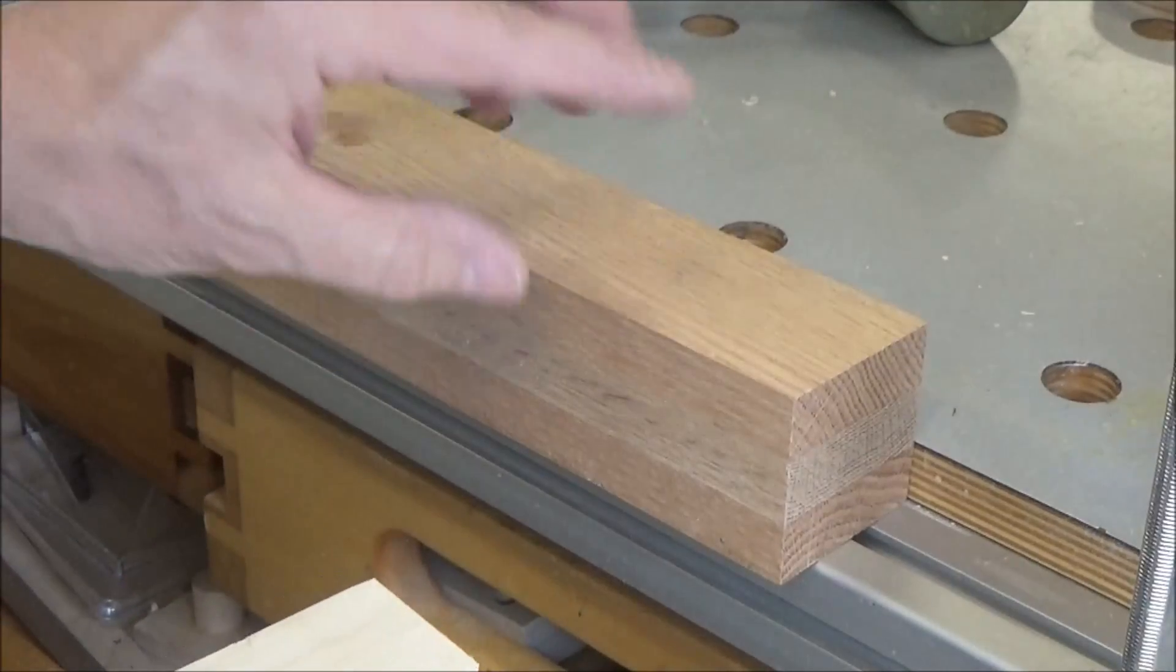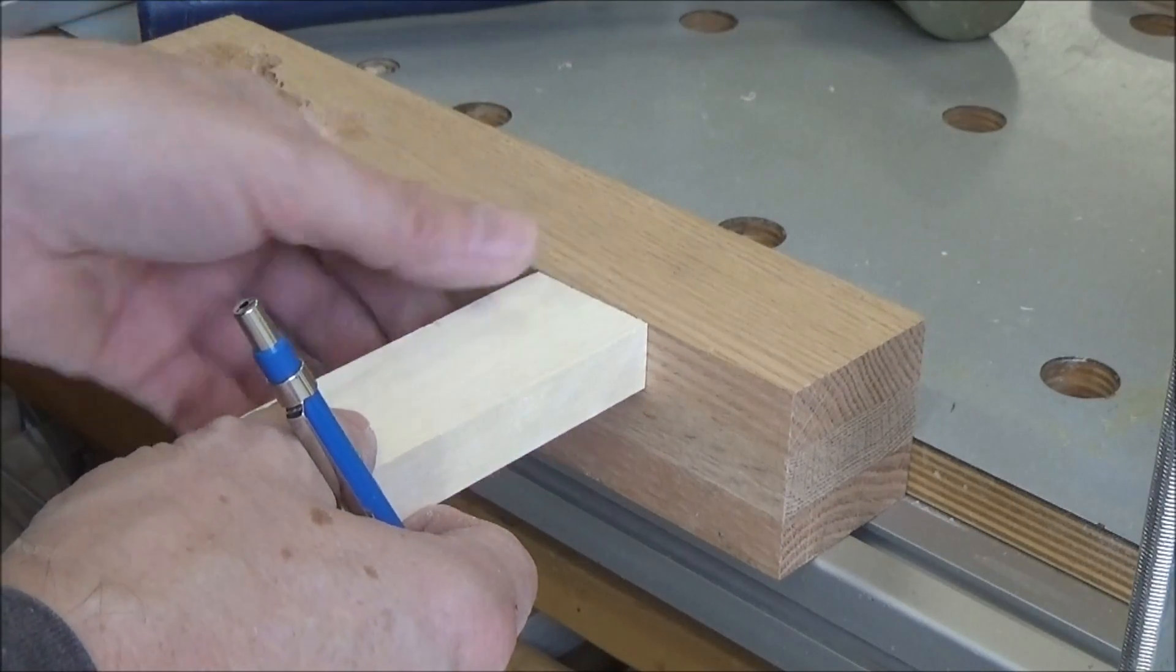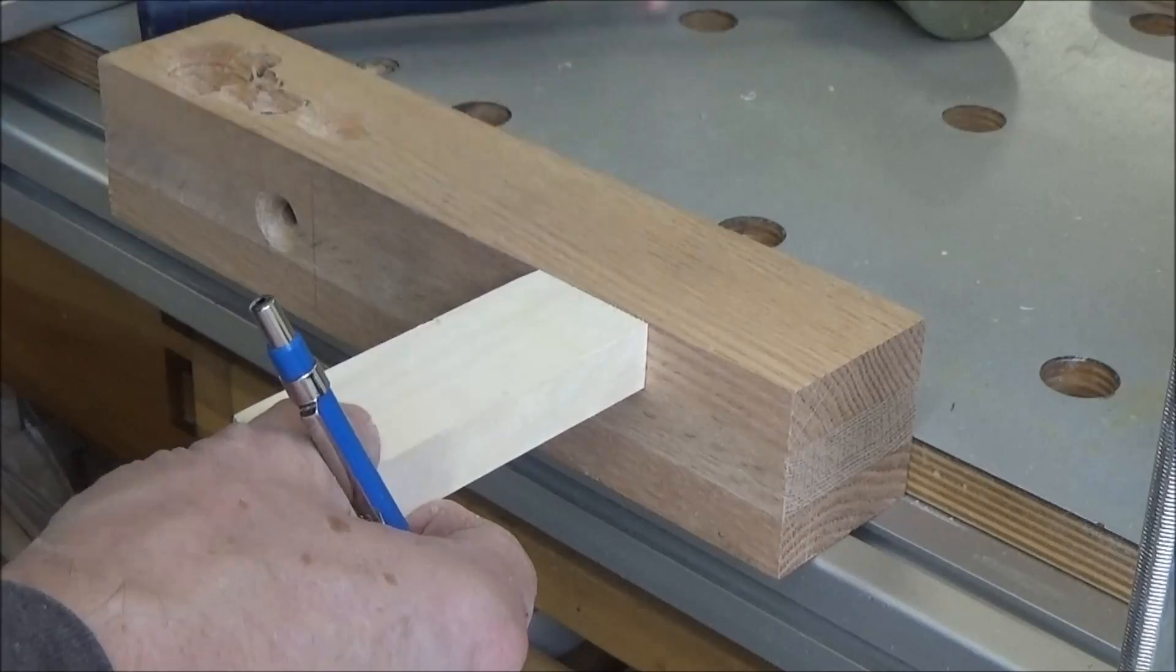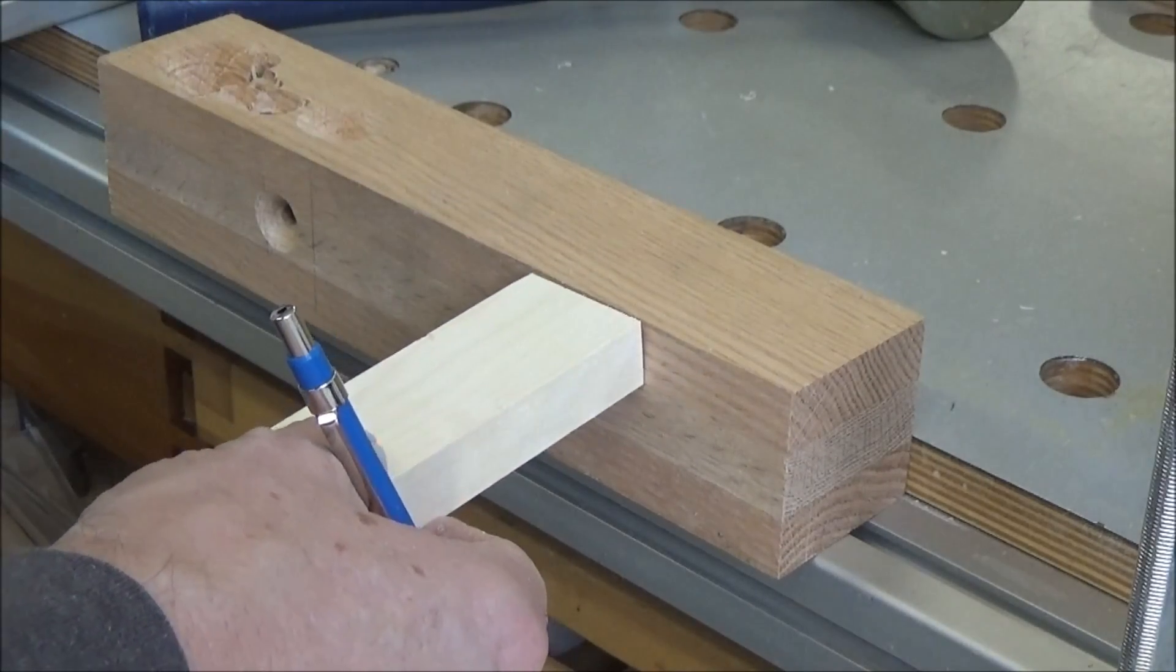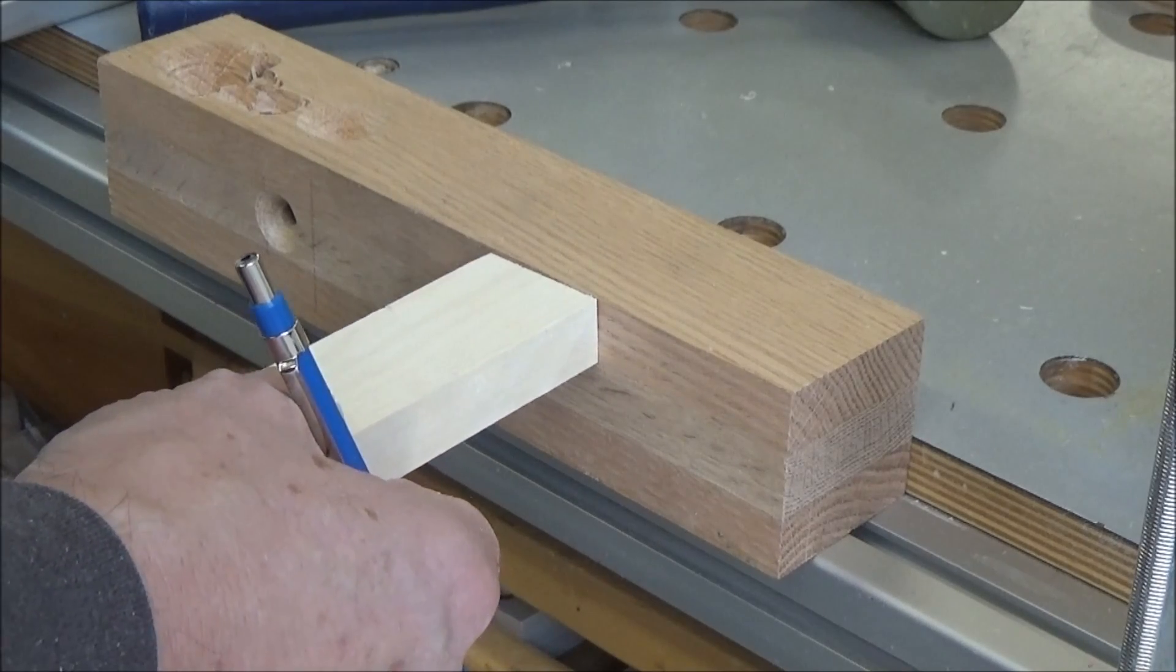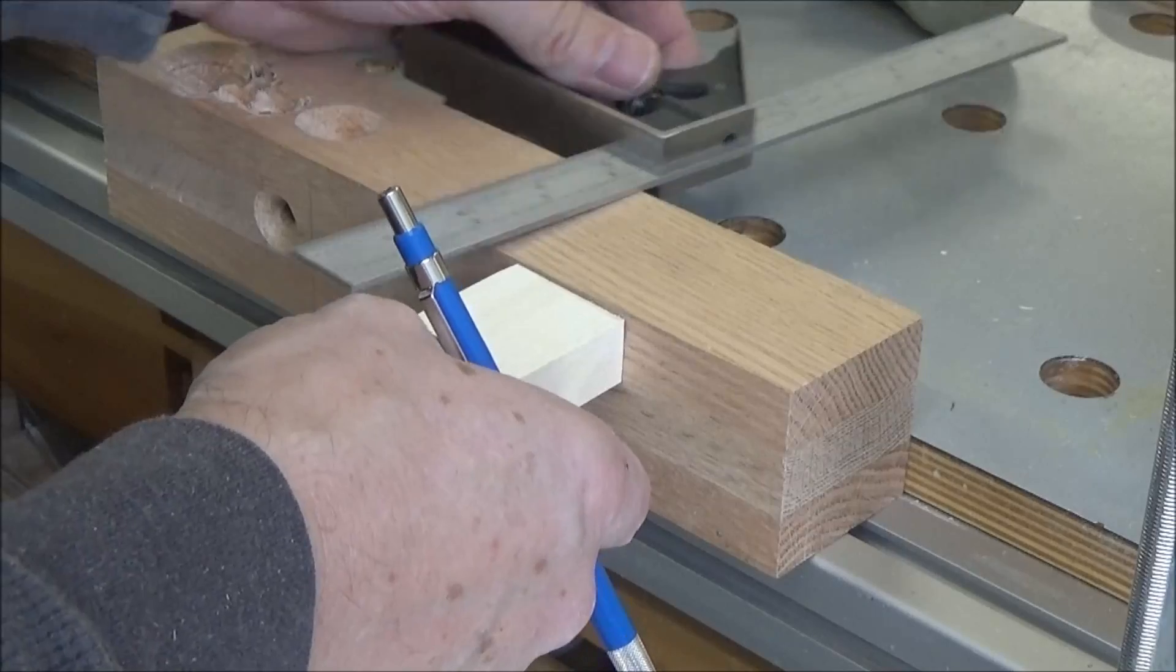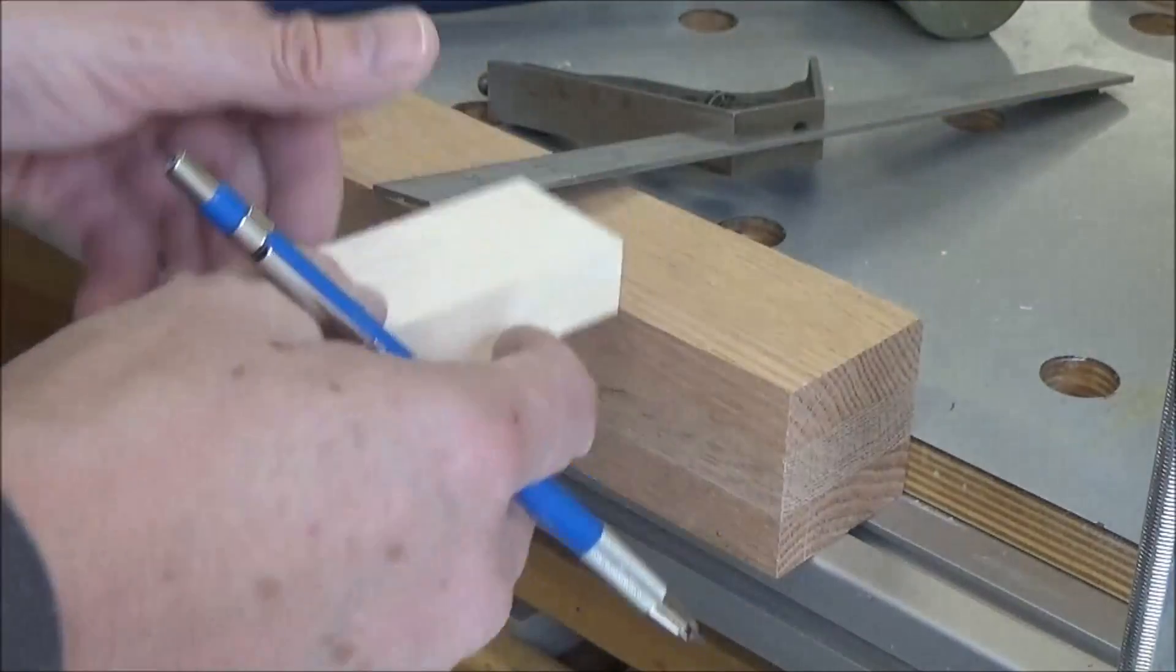Alright, let's imagine this is my leg and this is my rail that I want to attach to it a quarter of an inch offset in that direction. If I take my square here, let's make a little center mark on this first. Eyeball it.